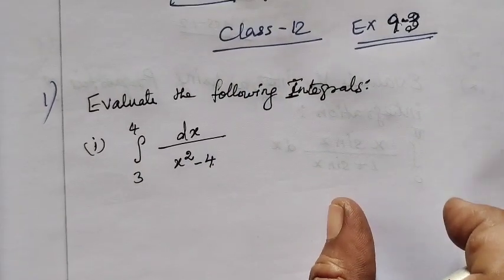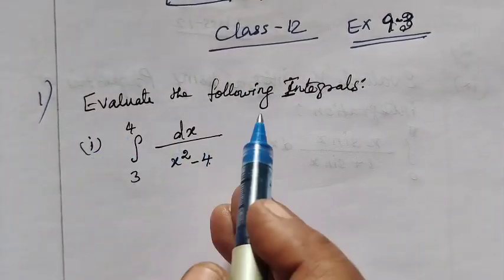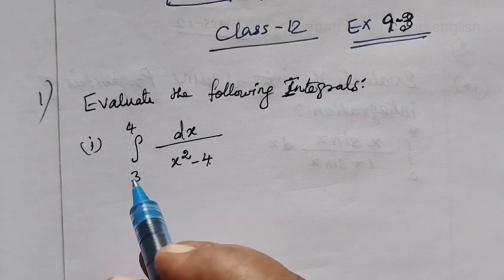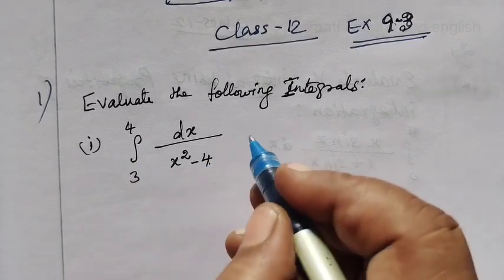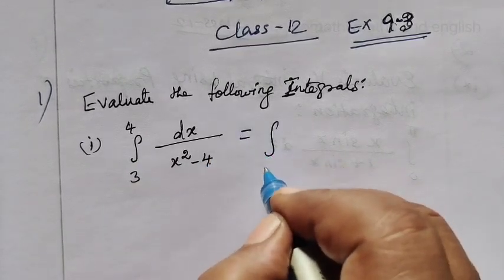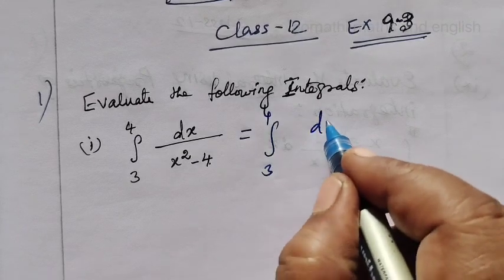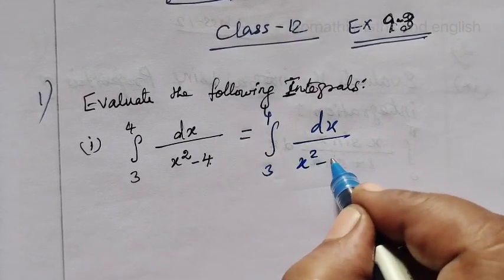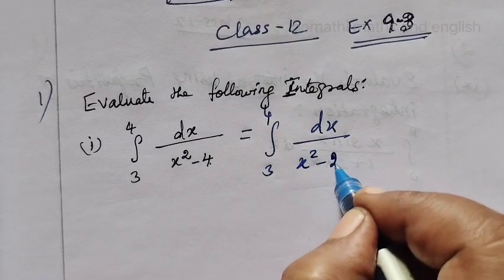For class 12 exercise 9.3, evaluate the following integrals. Integral 3 to 4, dx over x squared. This is integral 3 to 4, dx over x squared minus 2 squared.